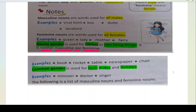Next hai common gender. Common gender jo hai — ab naam common se hi aapko pata chal raha hai ki donon mein hota hai. So it is used for both males and females. Examples: minister, doctor, singer.